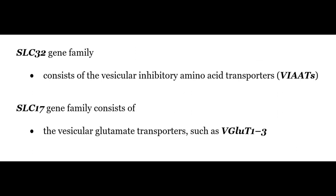The SLC32 gene family consists of the vesicular inhibitory amino acid transporters, also known as the VIAATs, and the SLC17 gene family consists of the vesicular glutamate transporters, such as the VGLUTs 1, 2, and 3.